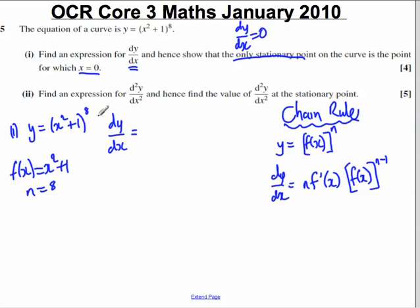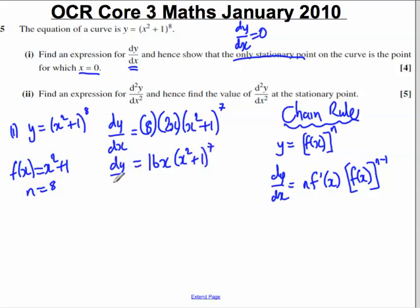Let's differentiate it. You bring the power down, so you've got 8. You multiply by the differential of the function. The differential of x squared plus 1 is simply 2x. And then you have your original function, x squared plus 1, all raised to 1 less power, which is 7. And you tidy that up. 8 multiplied by 2x is simply 16x, and you have x squared plus 1 to the power of 7. That there is your gradient function.